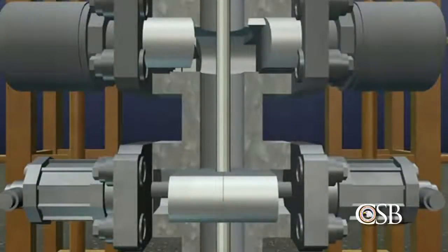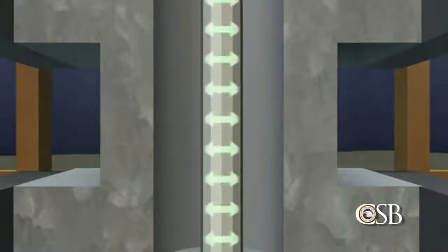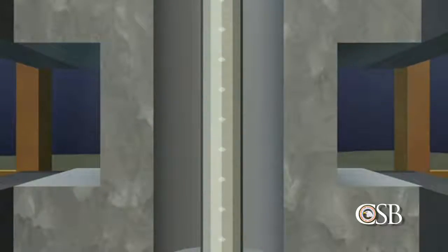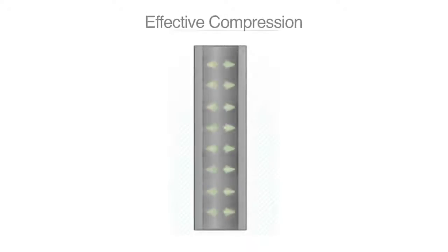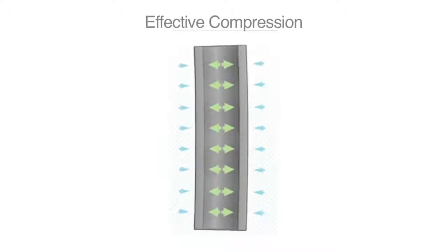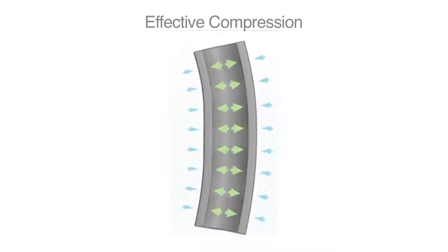During its investigation, the CSB identified a mechanism that likely caused the drill pipe to be buckled around the time of the explosion. This mechanism is called effective compression. Although effective compression had previously been noted as a hazard in other drilling operations, it had never been identified as a problem affecting drill pipe during well operations.